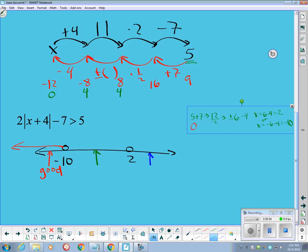Absolute value of 4 is 4. 4 times 2 is 8. 8 minus 7 is 1, which is not greater than 5.